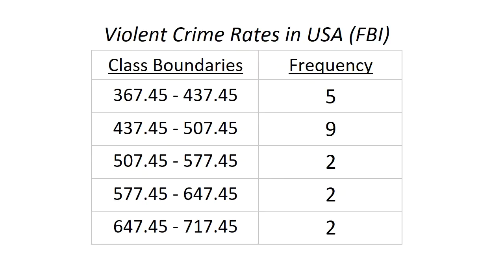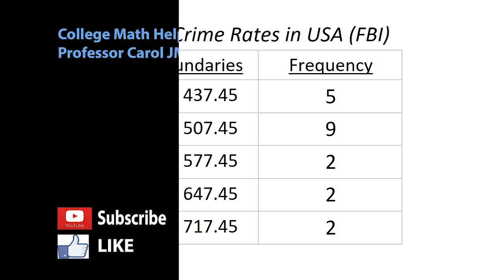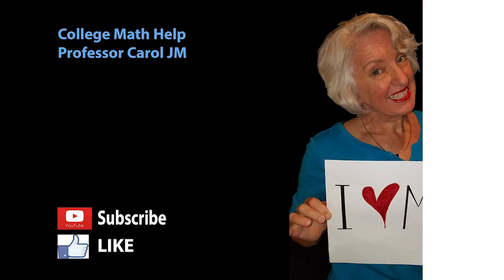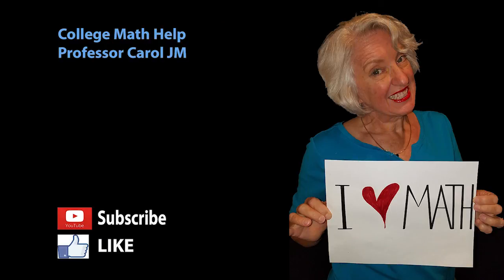When we're done, we have the violent crime rates in the USA from FBI statistics. The important information is our class boundaries and our frequency. Next, we'd probably want to find out whether this is normally distributed or not. I'd like to invite you to like this video and subscribe to this channel. Thanks very much for listening.